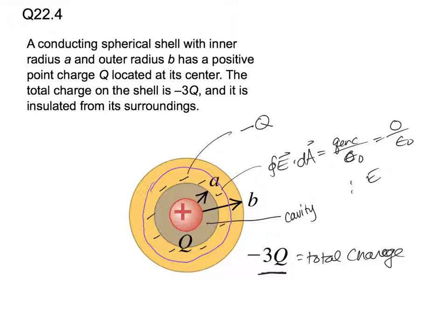Now, because the total charge on the conductor is minus 3Q, we've already put minus Q on the inner surface. That means that there's actually going to be some excess negative charge left over on the outer surface, which is going to be minus 2Q. So, and that's how we would solve that particular problem.